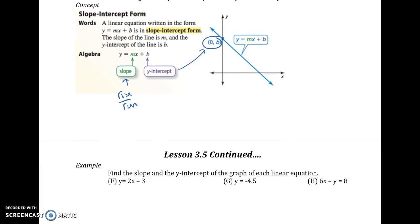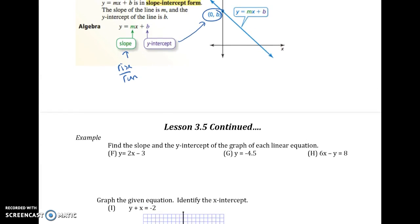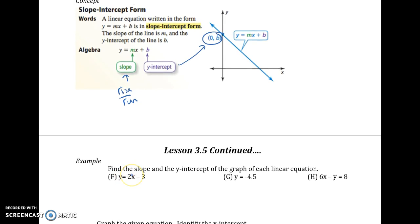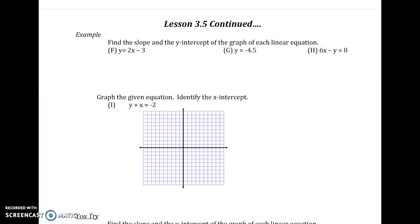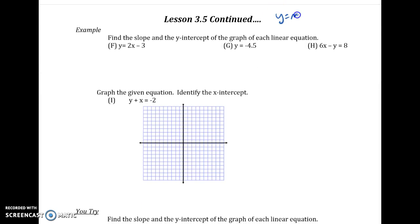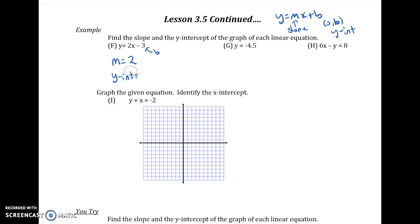From the equation in slope-intercept form Y equals MX plus B, we can pull out slope and Y-intercept. Remember, M is slope and the Y-intercept is the point (0, B) — always write it as a point, not as Y equals something, because that's a line. For example F: slope should always be the number in front of X as long as Y is by itself, so slope is 2. And B is the number on its own, so the Y-intercept is (0, negative 3).